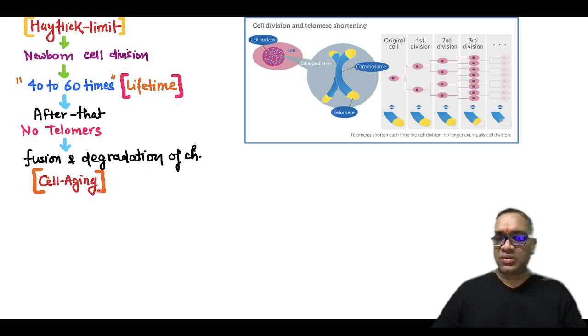So this is called cellular aging. As you can see in this cell also, in the nucleus, there are chromosomes and chromosomal ends, they are having yellow colored telomeres.